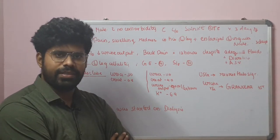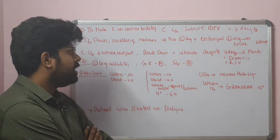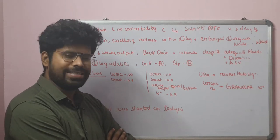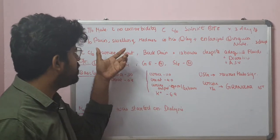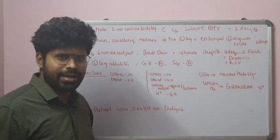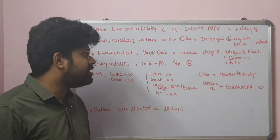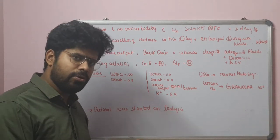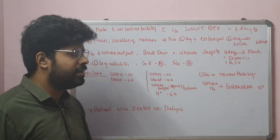As usual, we will start with the case scenario. A 50-year-old male with no comorbidities came to the casualty with complaints of snake bite, query Russell's viper bite, for the past 3 days. For the past 2 days the patient had complaints of pain, swelling, and redness in his left leg, associated with regional lymph node tenderness. His initial WBCT was prolonged. There was an increasing trend of cellulitis — first day it was below knee, second day it was involving above knee and gradually involving the thigh region. It is a progressive cellulitis.